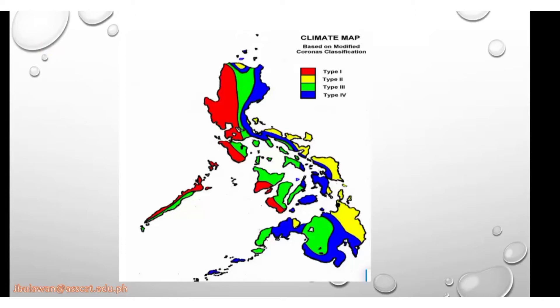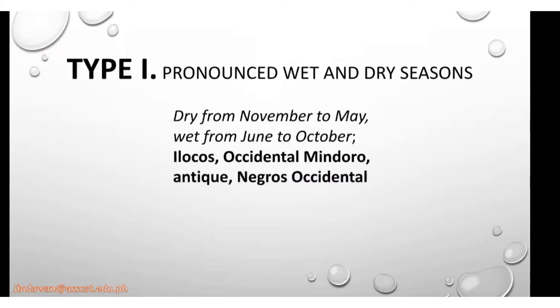As you can see, we have the map of the Philippines colored with red, green, blue, and yellow. These colors represent the four types of climate in the Philippines. For Type 1, places have pronounced wet and dry seasons.